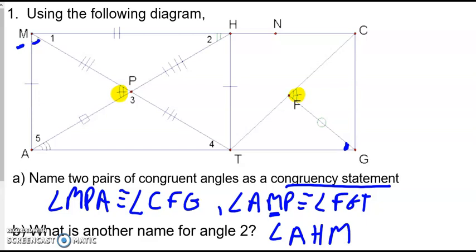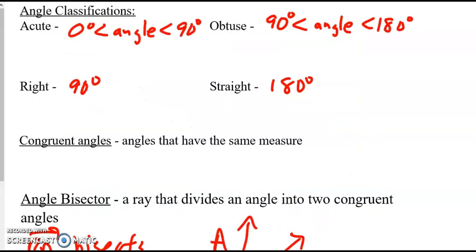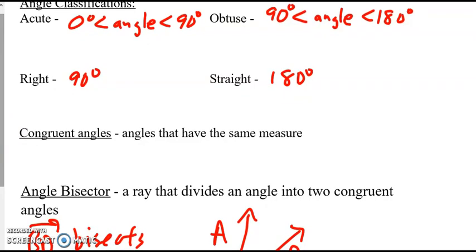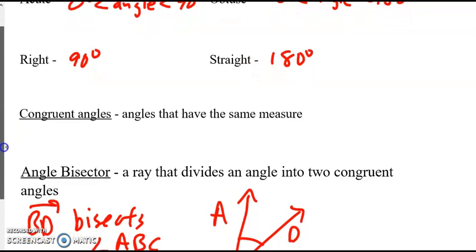A couple definitions here. If you want to go ahead and pause this so you can write these down and then resume, that would be fine. Here we have an acute angle. An acute angle, most people would say it's less than 90, but you can't forget that it is also greater than zero. Obtuse is greater than 90 degrees and less than 180. Right angles, which we've referred to already, are 90 degrees, and straight angles are 180 degrees. And these should actually be reviewed from earlier as well.